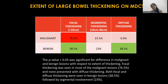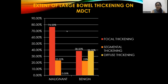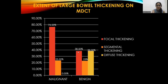Regarding the extent of large bowel wall lesion — whether focal, segmental, or diffuse thickening — the p-value was also less than 0.05, which is statistically significant. Focal thickening was seen in most malignant cases, with 76.5% showing focal thickening involving less than a 10 cm segment, while in benign cases the majority showed diffuse thickening. The bar chart confirms 76.5% focal thickening in malignant cases, while 38.5% of benign cases showed diffuse or segmental thickening.